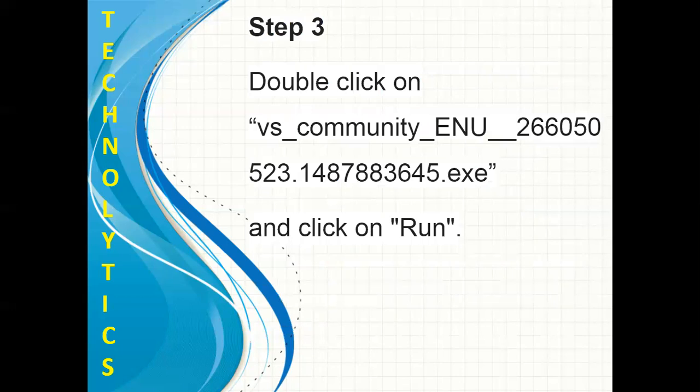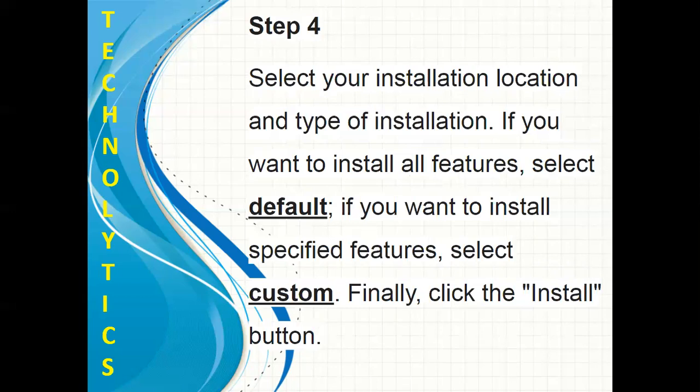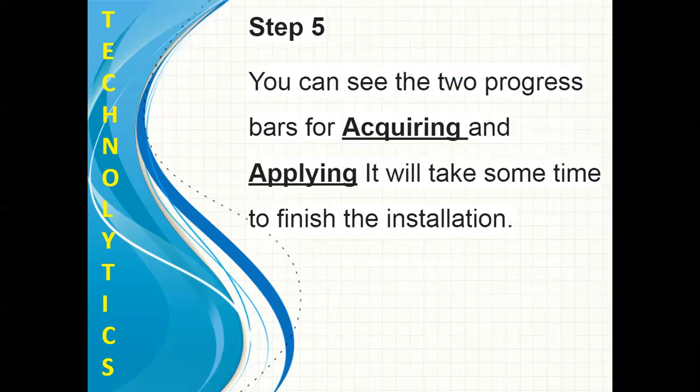Step 3. Double click on the .exe file and click on Run. Step 4. Select your installation location and type of installation. If you want to install all features, select Default. If you want to select only specified features, then select Custom. Finally, click the Install button.